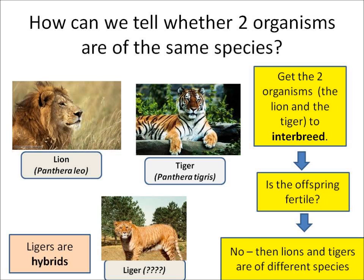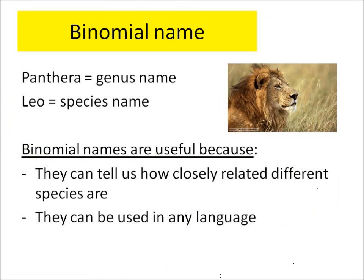Most hybrids are infertile. A binomial name is a combination of two Latin names used to identify any species. For instance, Lions are called Panthera leo — Panthera is the genus name and leo is the species name. Binomial names are useful because they show how closely related different species are, and because they're in Latin, they can be used in any language.